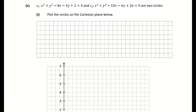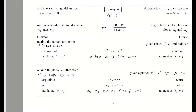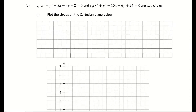Part 1 is asking us to plot the circles on the Cartesian plane. They're giving us two circles, C1 and C2, and in order to plot them we need to find their centers and their radius. To do that we're going to use the log tables on page 19, where it gives us the equation of the circle, and from that we can find the center and the radius.